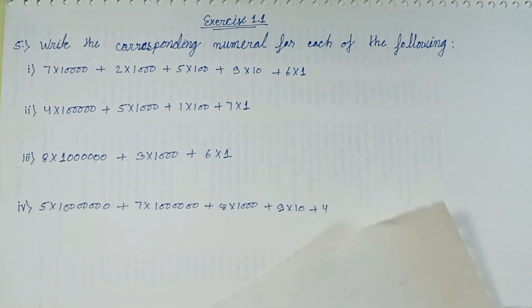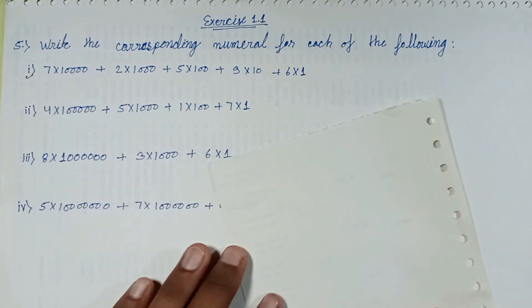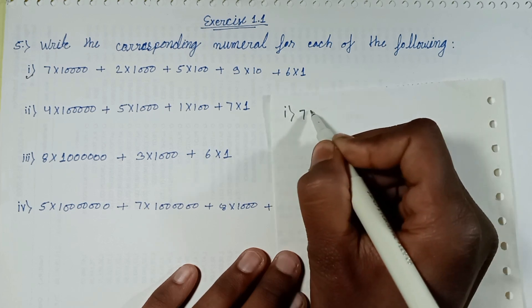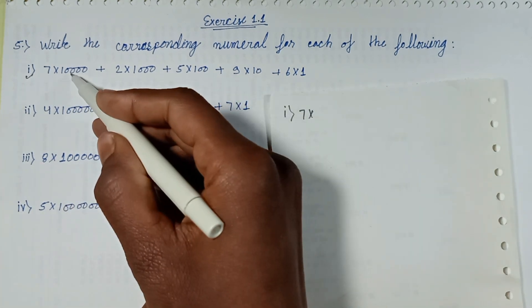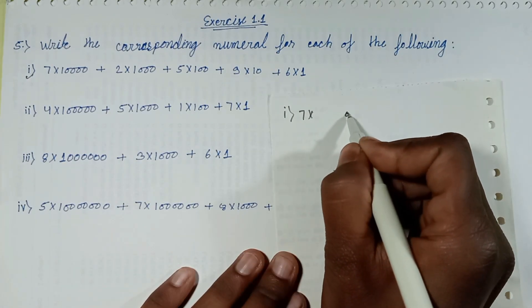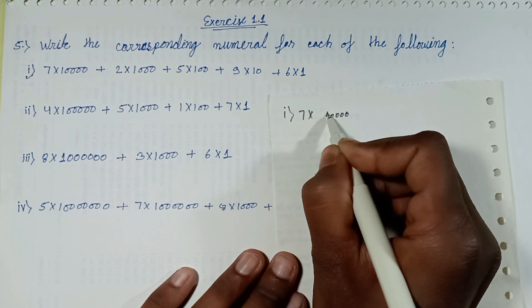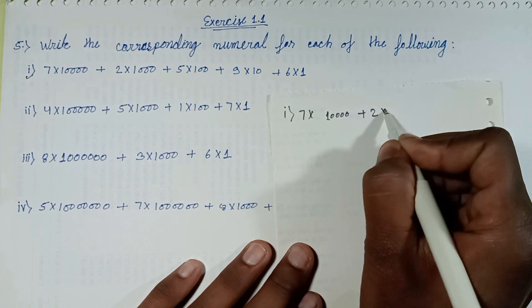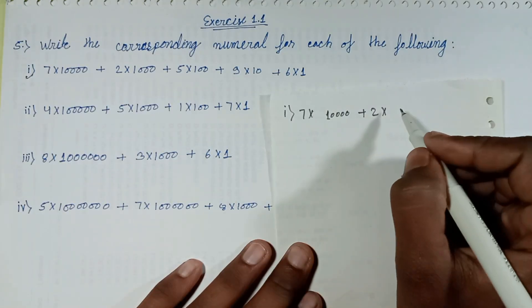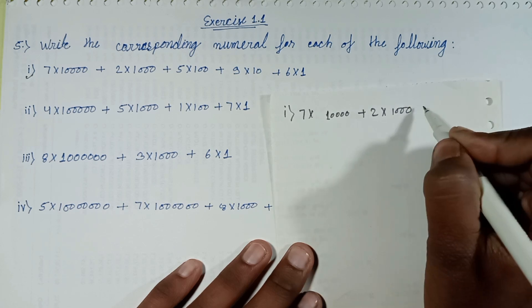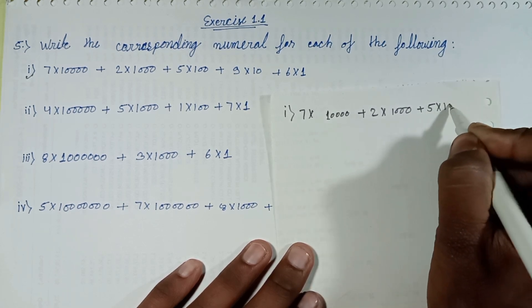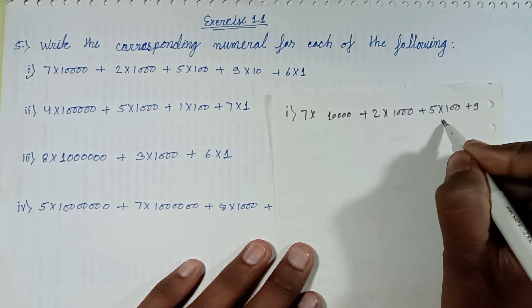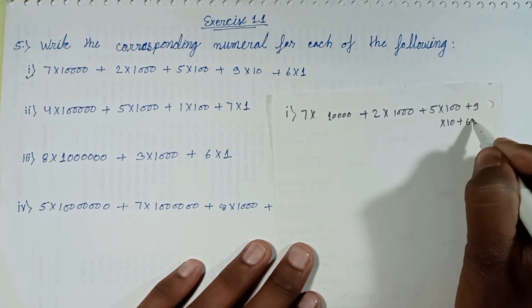First, question number 1. Write down: 7 multiplied with 10,000, plus 2 multiplied with 1,000, plus 5 multiplied with 100, plus 9 multiplied with 10, plus 6 multiplied with 1.